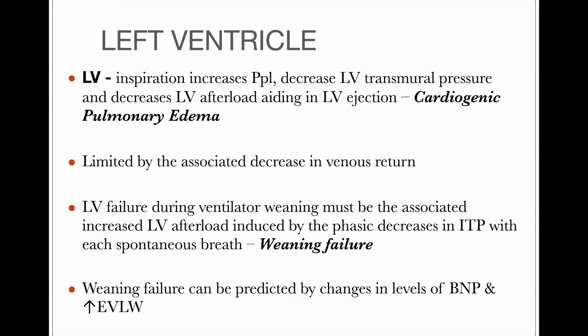If LV ejection fails due to reduced transmural pressure — if the transmural pressure is high, cardiac output will be more; if low, less volume leaves the left ventricle — this is called cardiogenic pulmonary edema. In a failing heart, the transmural pressure cannot be overcome, so LV afterload decreases and there is decreased LV ejection, leading to cardiogenic pulmonary edema. This is limited by the associated decrease in venous return from positive pressure. If venous return is high but left ventricular output is low, all the blood remains in the lungs, causing cardiogenic pulmonary edema.